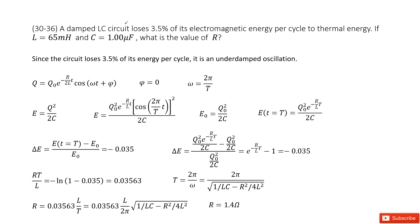Looking at this problem, we can say it first tells us energy is lost from electric energy to thermal energy. This is under-damped oscillations, which means the charge and current change with time t. From the textbook, we know the charge changes with time t according to a function that contains the term e to the negative R over 2L times t. This tells us it is under-damped oscillations.